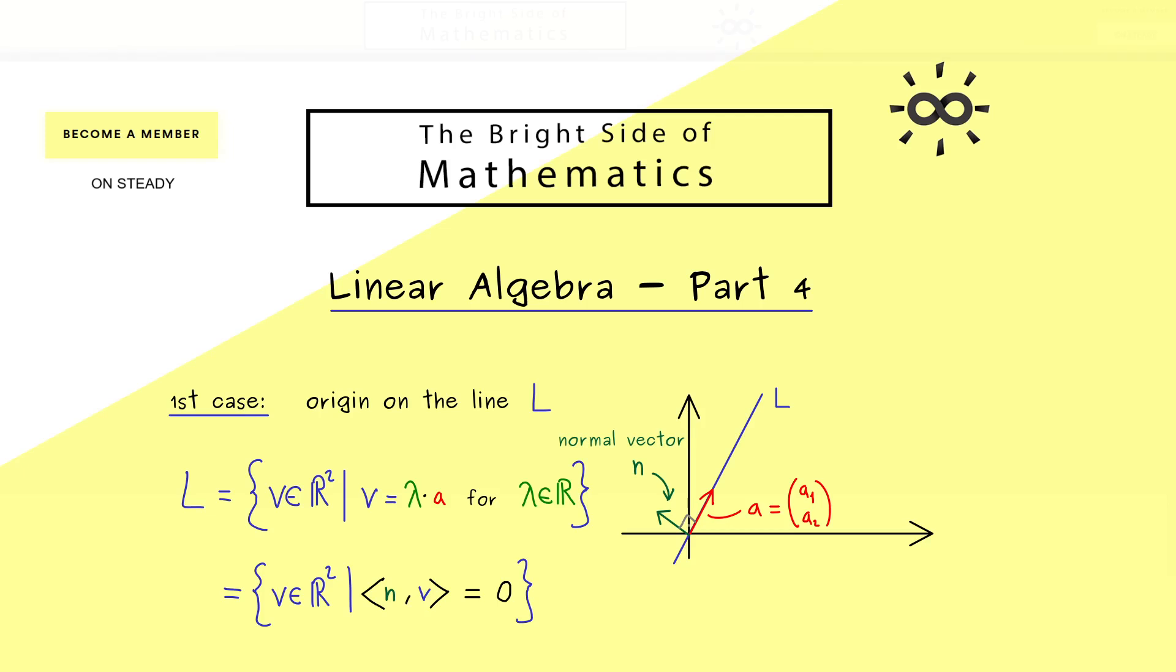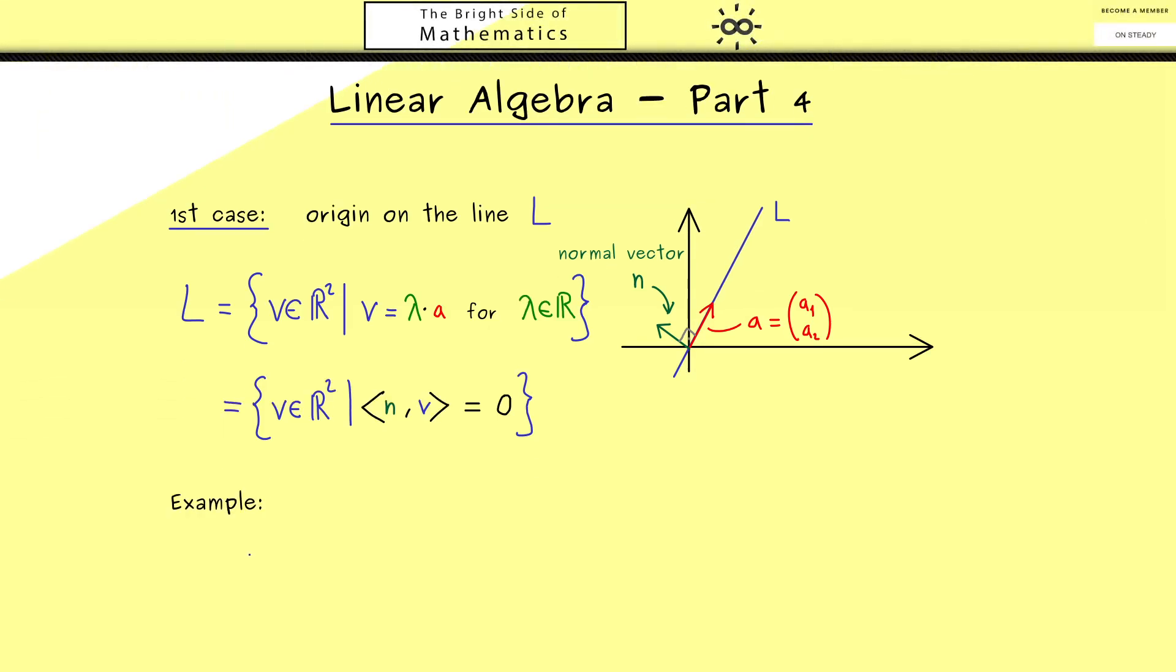That might be helpful to look at an example. So we just take a normal vector N and then we define the line L. For example let's take this vector here which should be (3, -1). Hence then the line L should look like this.